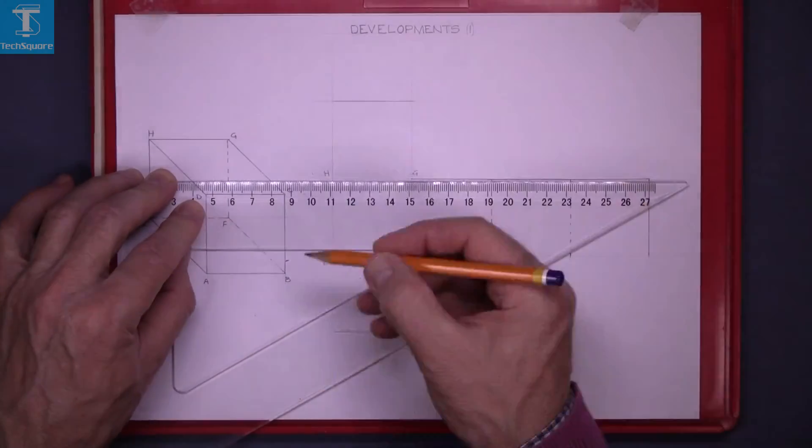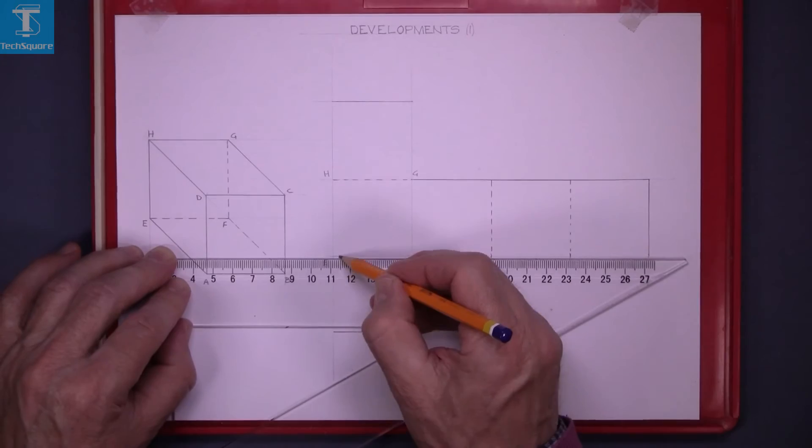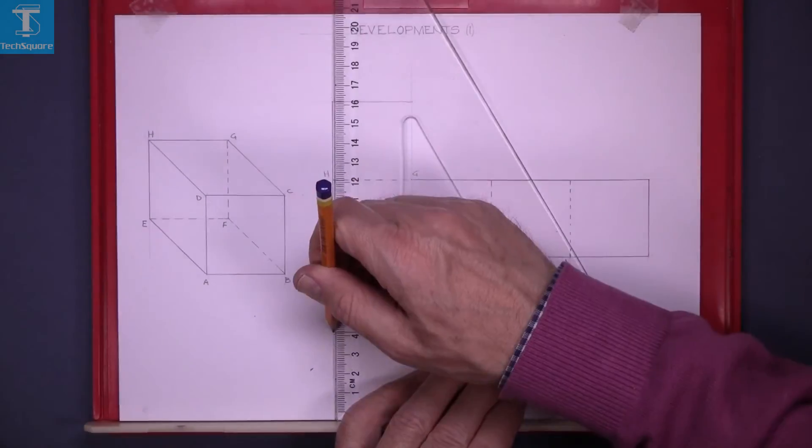Lines that are going to be cut are solid lines and lines that are going to be folded are dotted lines.